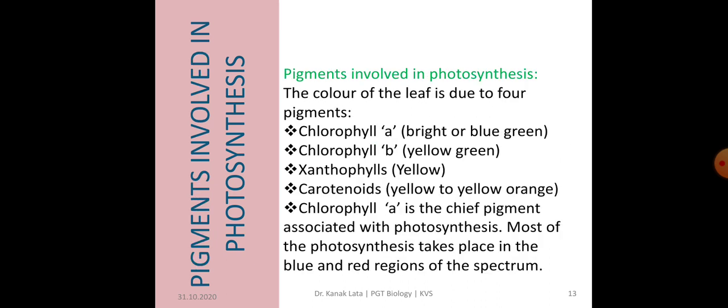Next is about pigments involved in photosynthesis. As we know that the color of the leaf is due to four pigments. They are chlorophyll A which gives bright or blue-green color, chlorophyll B that is yellow-green, xanthophyll that is yellow and carotenoid that is yellow to yellow-orange.